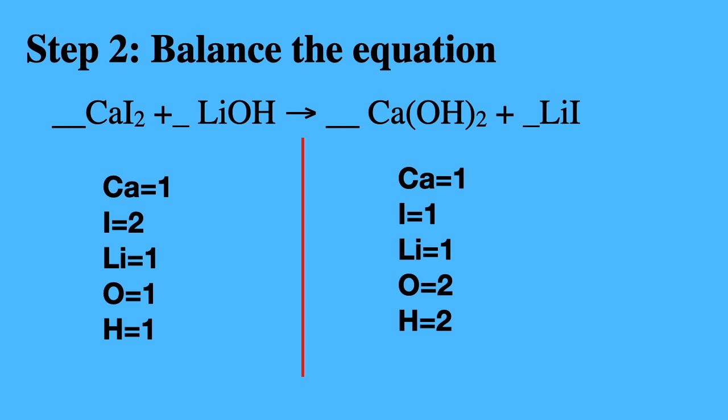Calcium equals 1. Iodine equals 2. Lithium equals 1. Oxygen equals 1. And hydrogen equals 1. On the right side, we have our products. So we're going to go ahead and list the elements again. We have 1 calcium, 1 iodine, 1 lithium, 2 oxygen, and 2 hydrogens. Is this equation balanced?